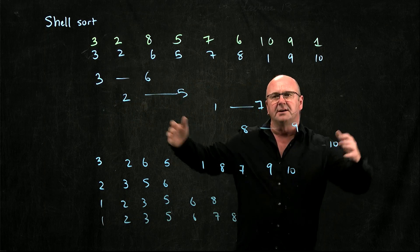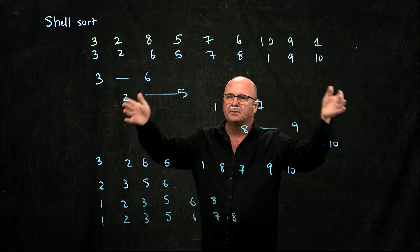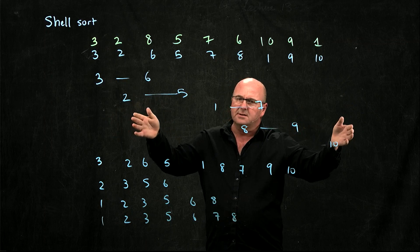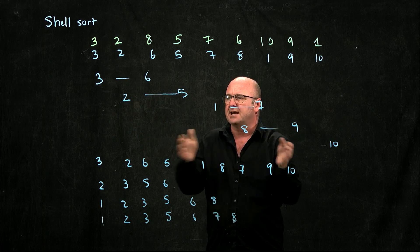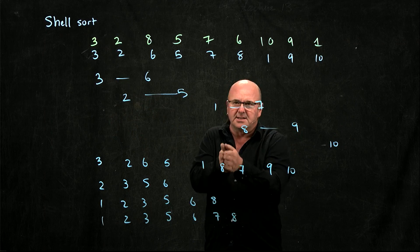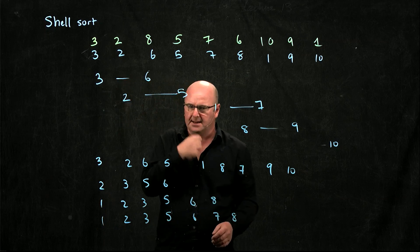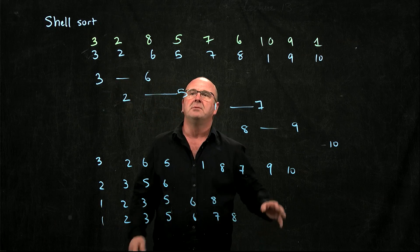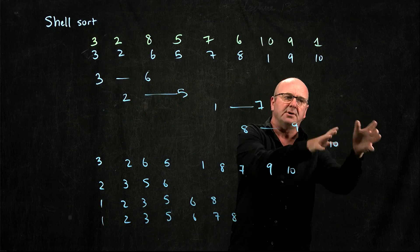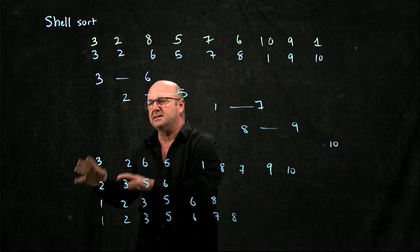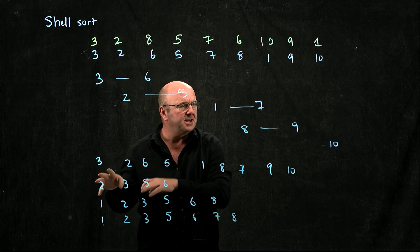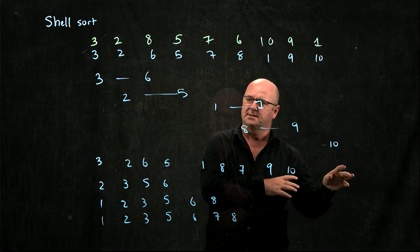So the idea is that you start off with a large gap. You sort those things. Then you go for a smaller gap and sort those things. Then you go for a smaller gap and sort those things in a smaller gap. Until you get to a gap size of 1 and do an insertion sort. And hopefully, as happened here, we moved the smaller elements from the right-hand side to the left-hand side. And we moved the larger elements from the left-hand side to the right-hand side.